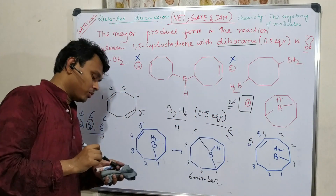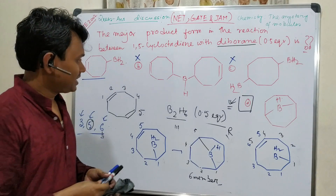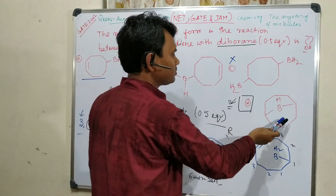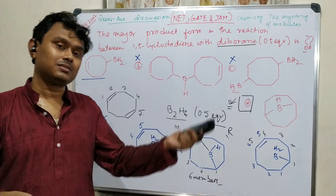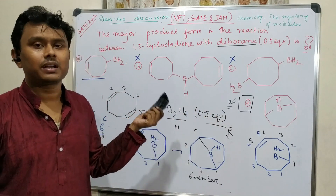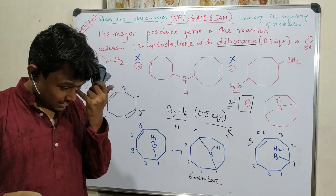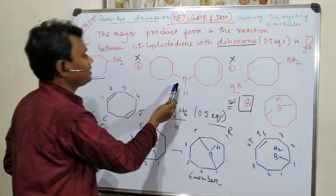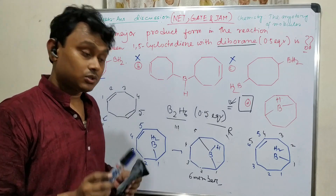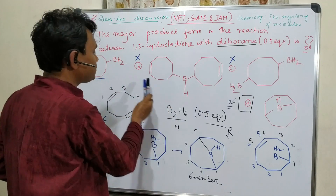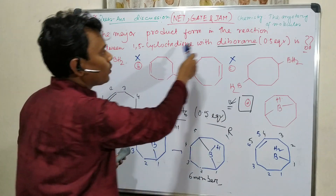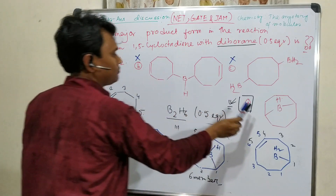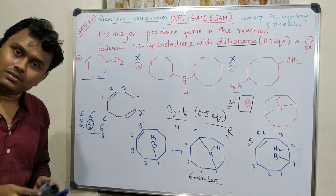The answer is done. If you just memorize that BH₃ with 1,5-cyclooctadiene gives 9-BBN, that is true — but at this condition you can't confirm the product without reasoning. And if you made the mistake of counting diborane as 0.5 BH₃ instead of 1 equivalent BH₃, you will pick the wrong product. So read the question properly — 30 seconds is enough to solve this if you read it right.